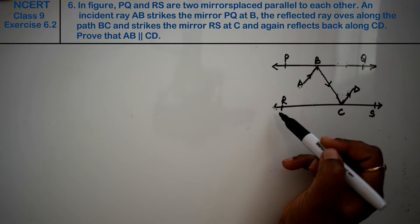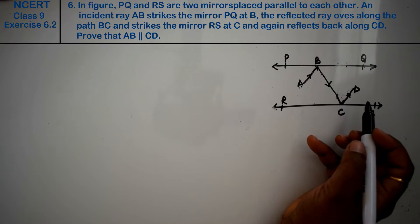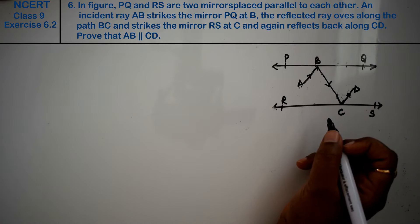Friends, PQ and RS are two mirrors which are parallel to each other. An incident ray strikes the mirror PQ at B.